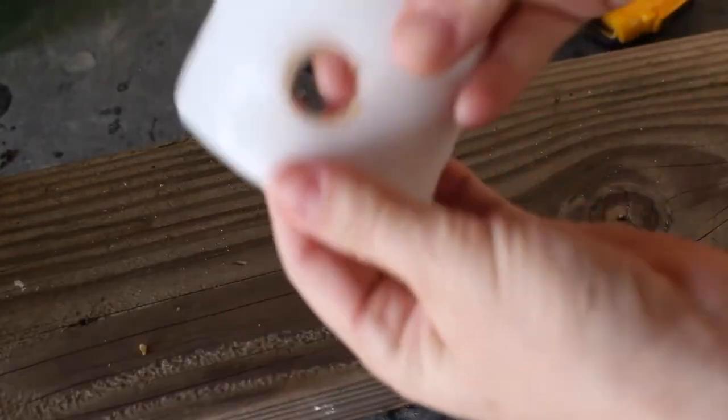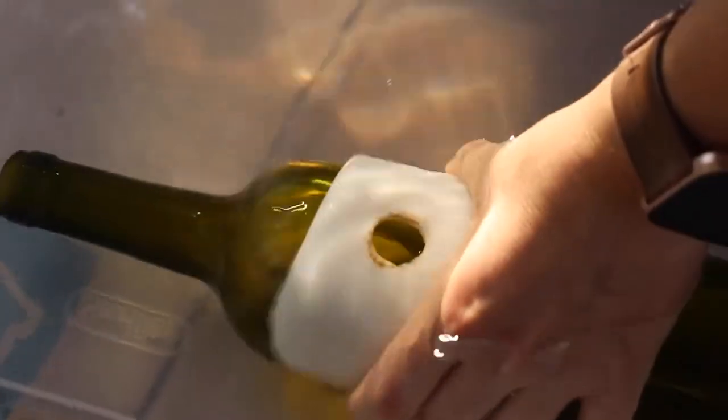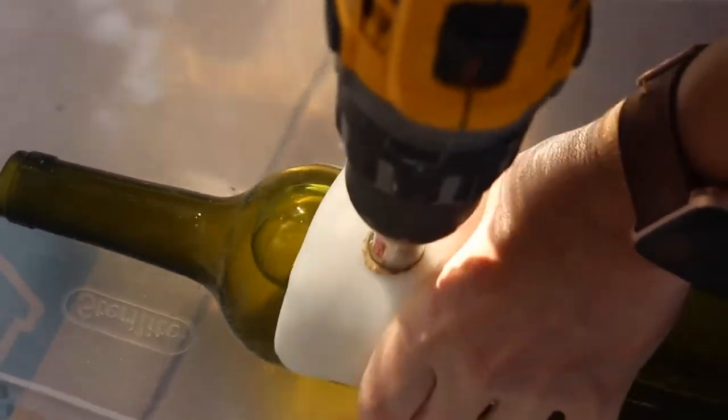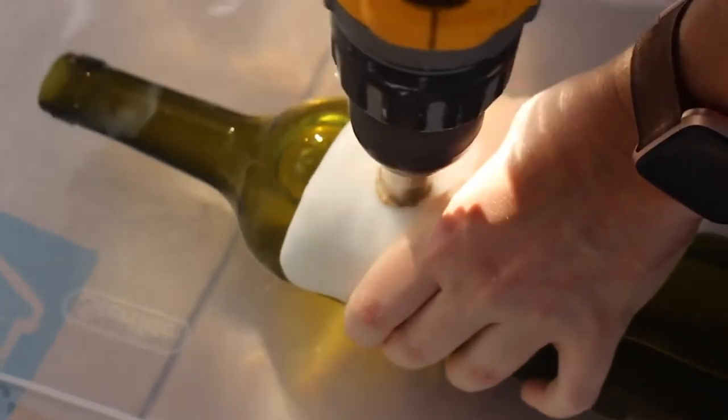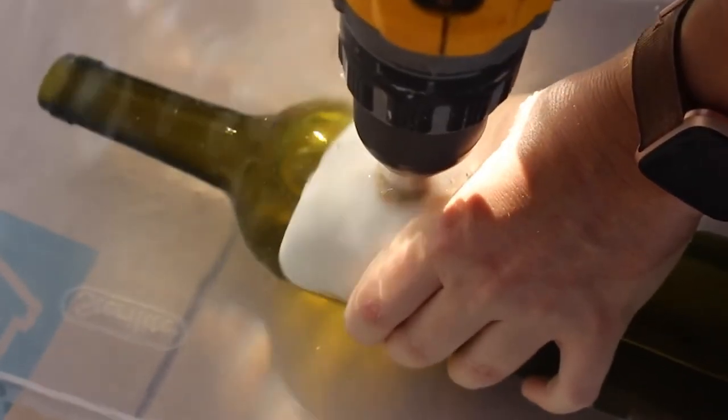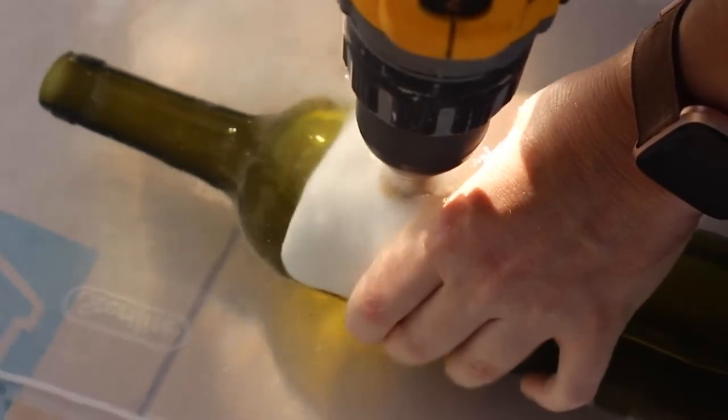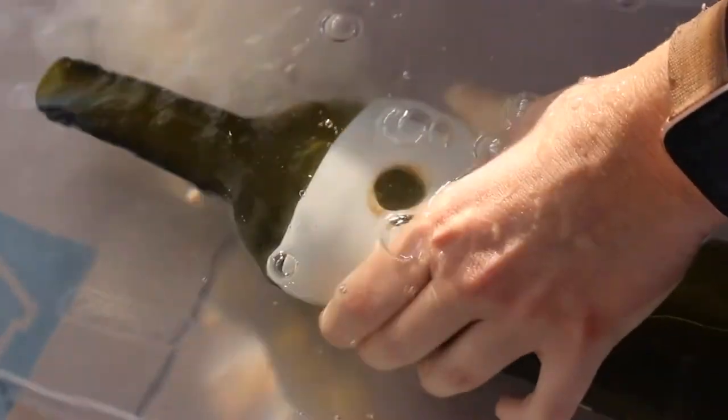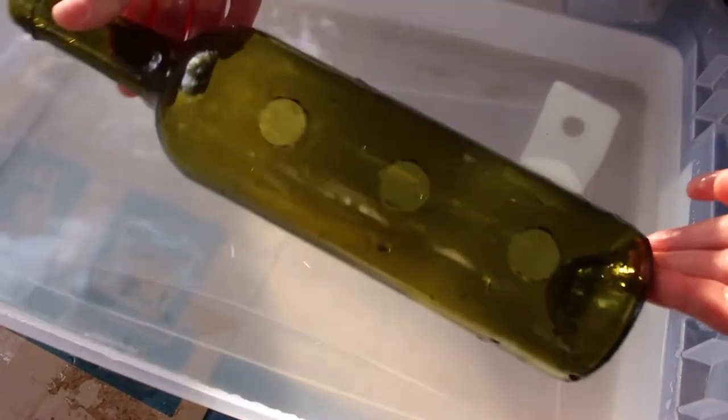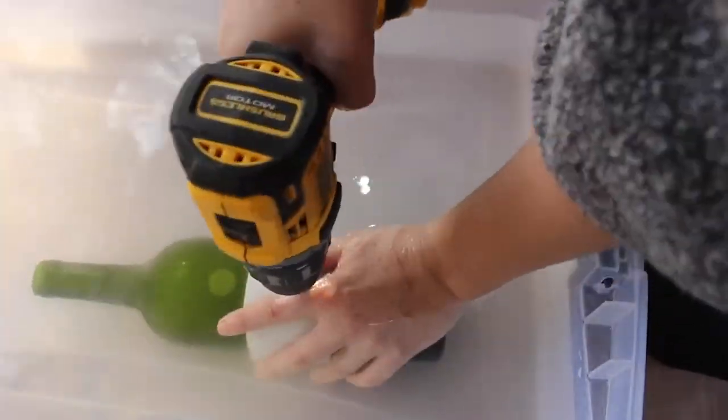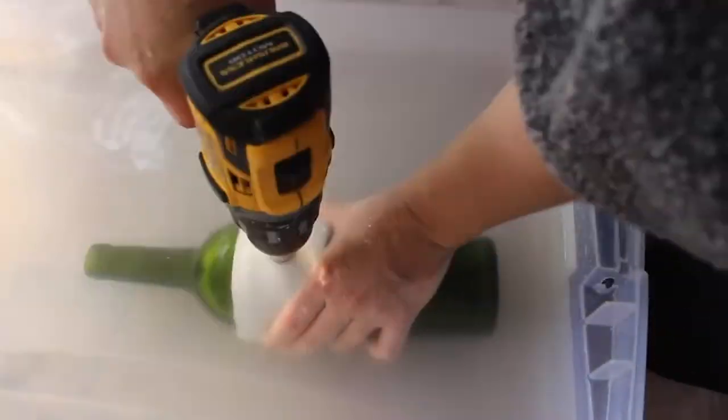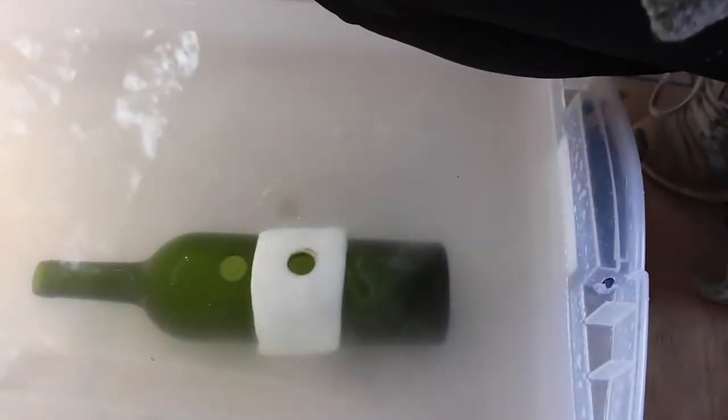So I drilled my hole and then you're going to want to submerge it in just enough water that it is covered because you don't want to be breathing in any glass dust. And as you can see, you're able to hold the piece of plastic with the wine bottle and easily drill a hole. So for this first one, I drilled three holes in a row on one side of the wine bottle. And for the next one, I wanted to drill holes all the way around the wine bottle so it can stand up as a centerpiece on a table.